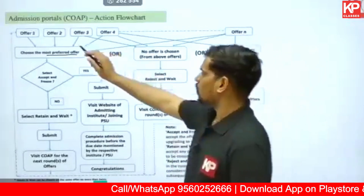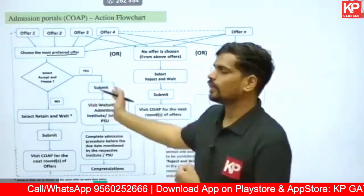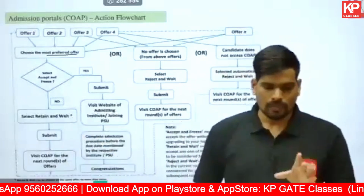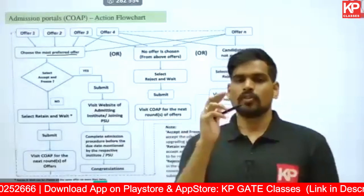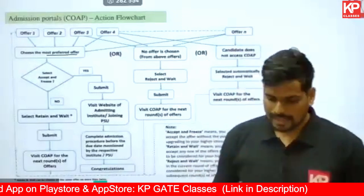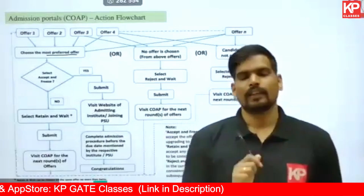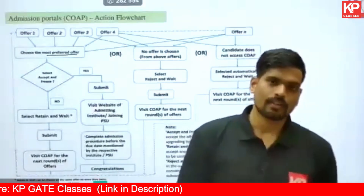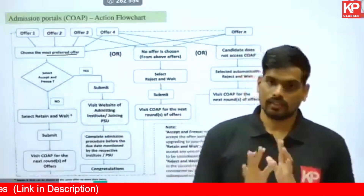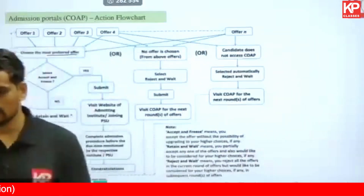In the second round, if you get a better option, you can accept and freeze and finalize your admission. If you're still not happy, you can retain and wait again. One important rule: you cannot select Retain and Wait more than two times for the same college and same course. For example, if you selected Retain and Wait for IIT Roorkee's MURP in Round 1 and again in Round 2, then in Round 3 you cannot retain that option — you must either accept it or reject it. That's the complete procedure for COAP.